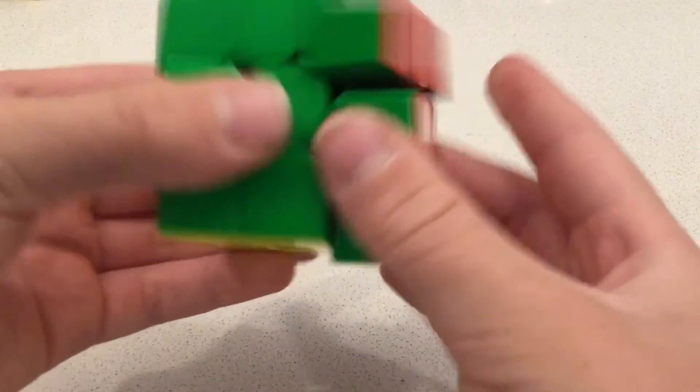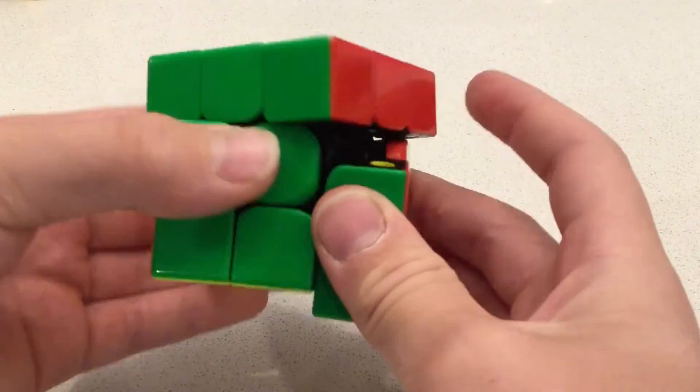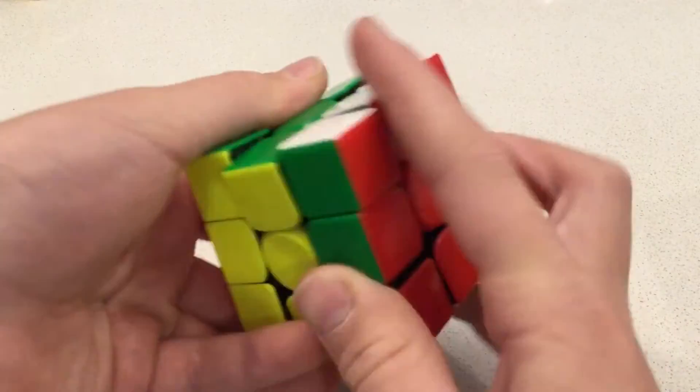the corner cutting is okay. It does about line to line reverse. It's pretty normal for a cube, which is better than a normal Tornado V2.